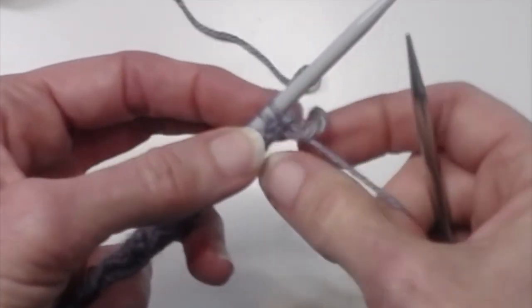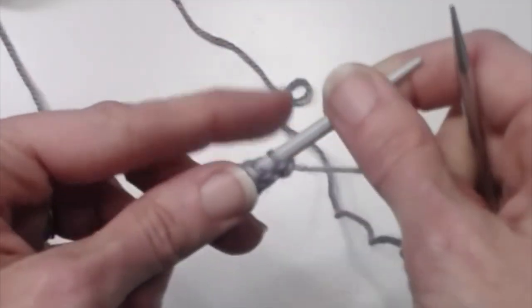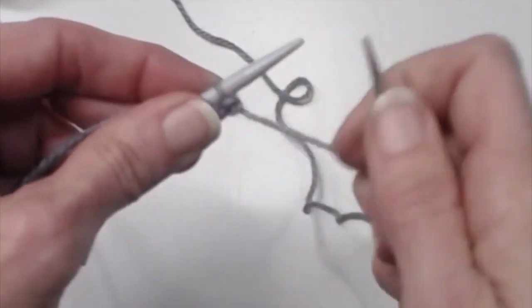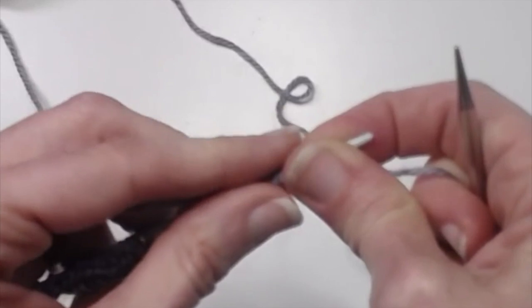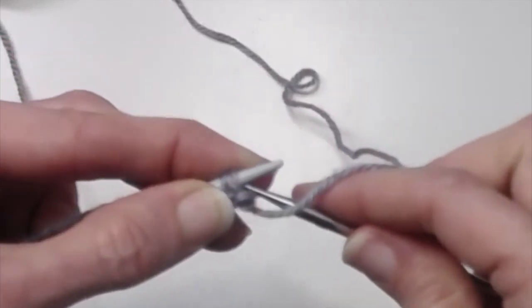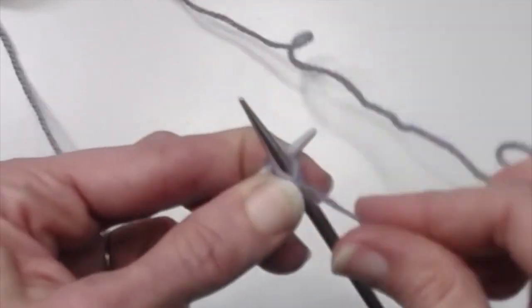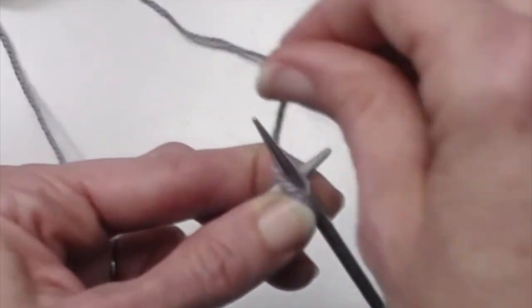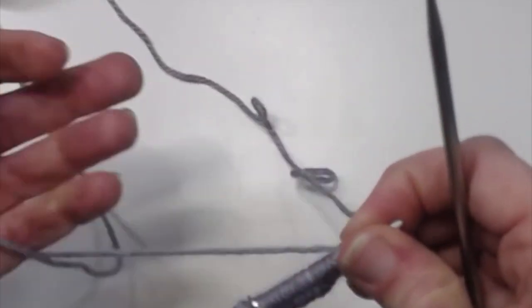So all I need to do when I work that first row is just hang on to that tail for a second. So if you're a thrower, it's quite easy because you can hang on to the tail with your left hand. And here my first row in this pattern happens to be a purl, and I would be able to just start purling. And once I get one stitch done, I can let go of the tail.